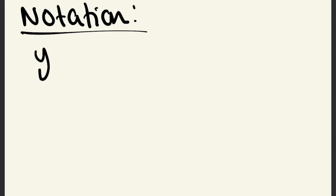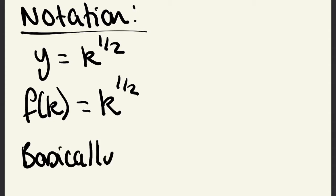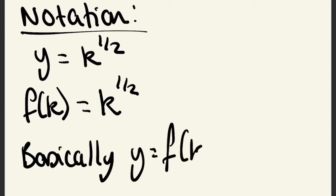Moving on to a recap of mathematical notation — I'm going to use the example of y equals k to the half to illustrate this. Instead of writing y you're going to see f of k, so you can write f(k) equals k to the half rather than y equals k to the half. Basically f(k) is the same as y, and in this case we're saying that y is equal to k to the half.